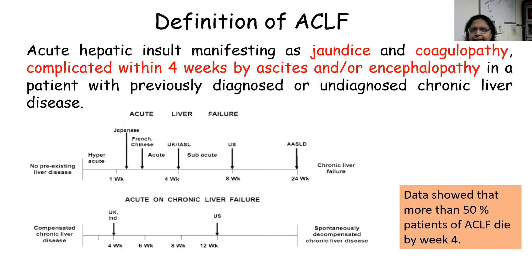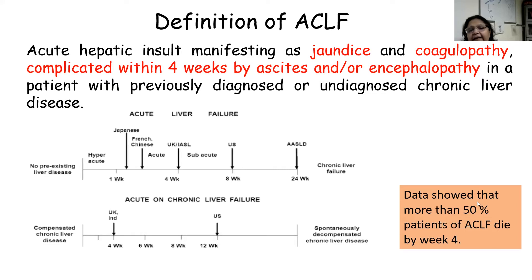When we talk about the definition, the APACEL definition of ACLF is an acute hepatic insult which manifests as jaundice and coagulopathy, and is complicated within four weeks by ascites and/or hepatic encephalopathy in a patient with previously diagnosed or undiagnosed chronic liver disease. ACLF was brought in as a definition to consolidate hyper-acute, sub-acute, and acute liver failure categories. Since 50% of all ACLF patients die within four weeks, the complications of ascites and encephalopathy should happen within four weeks to identify cases with higher likelihood of mortality.